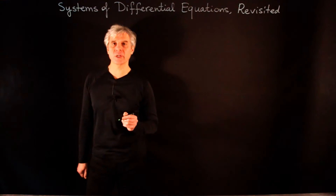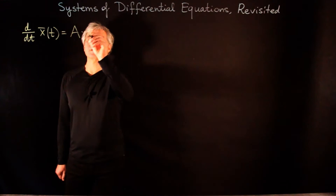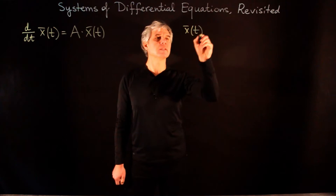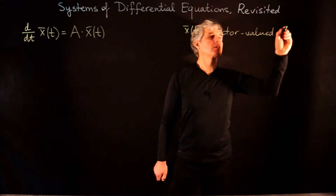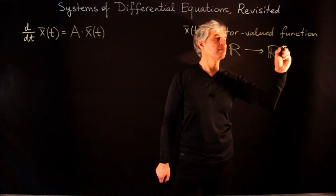In this lecture, we revisit the topic of systems of linear differential equations. Suppose we have the following system of equations: d/dt x(t) is equal to A times x(t). Here, x(t) is a vector-valued function — it sends real numbers (the t parameter) to R^n.